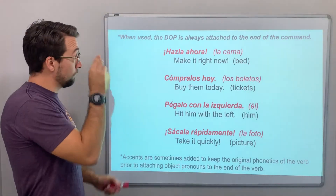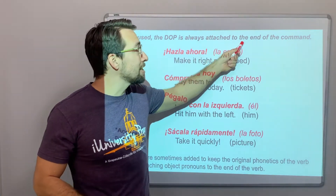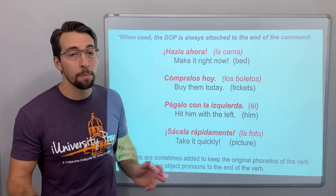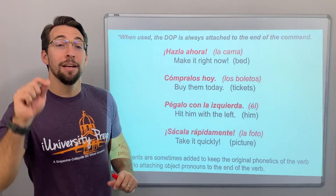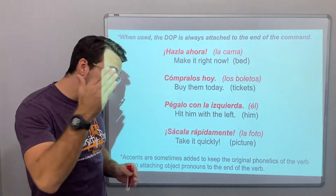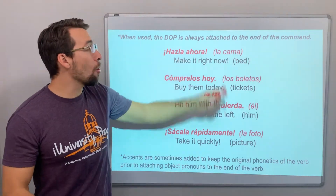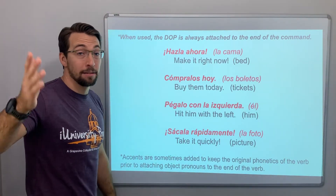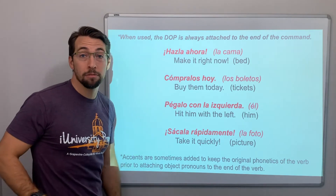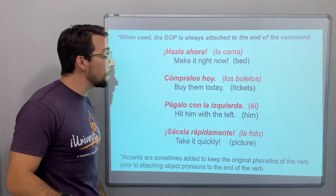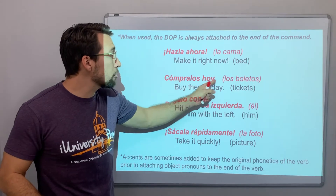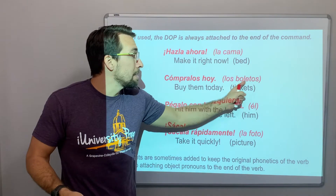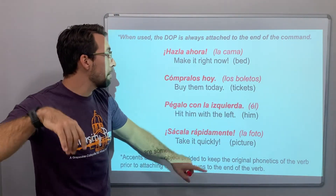Now check this out. When used, the direct object pronoun is always attached to the end of the command. You use a direct object and it's attached to the verb. Hazla ahora — what is 'la'? La represents la cama, the bed. Make it. Make it right now. Compralos hoy — what am I buying? The tickets, masculine plural. Buy them today. Compralos hoy.